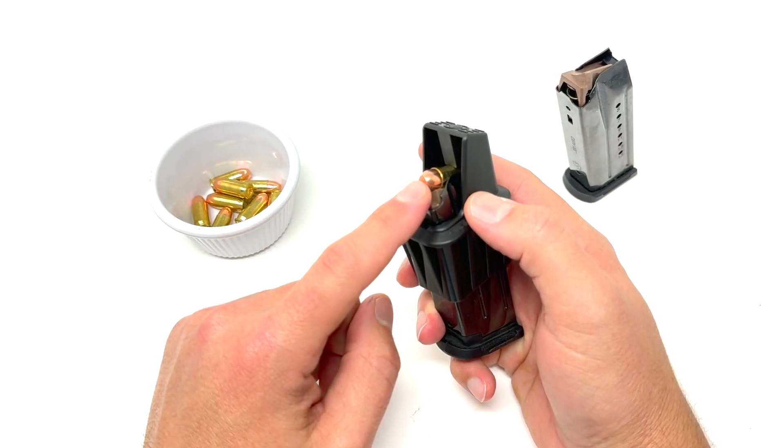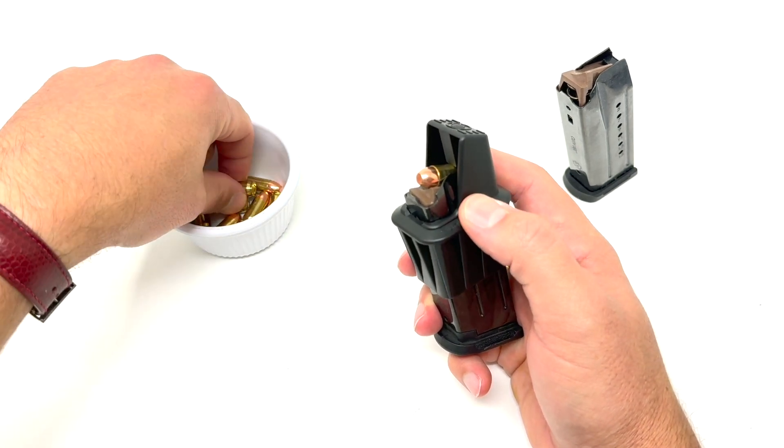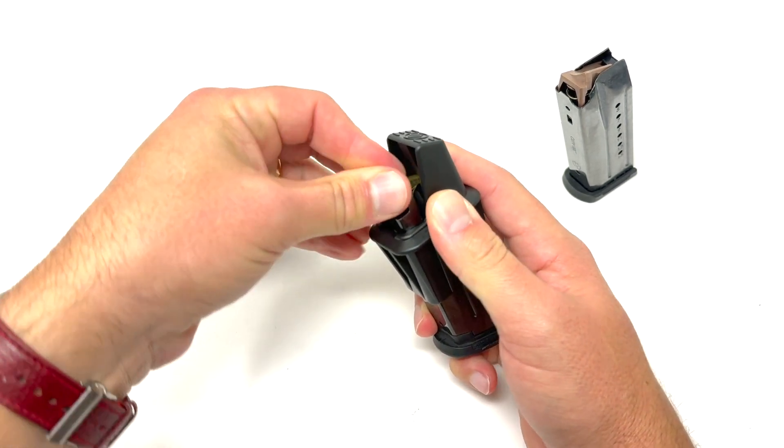Go ahead and load one round to start in the LCP Max 380. Put the Makershot loader on top. You can push down and advance to the plunger.